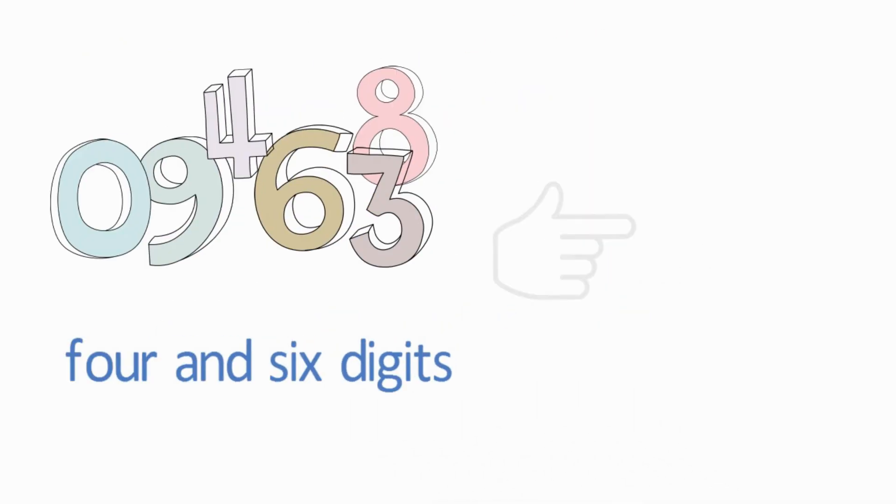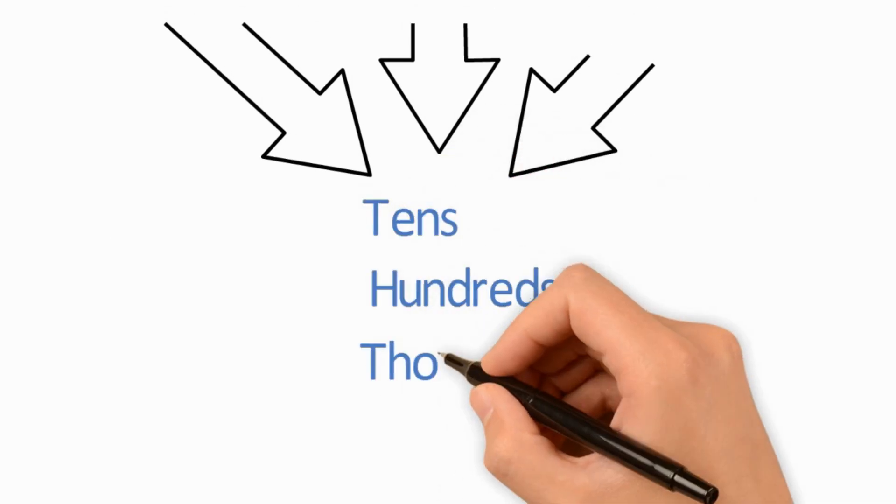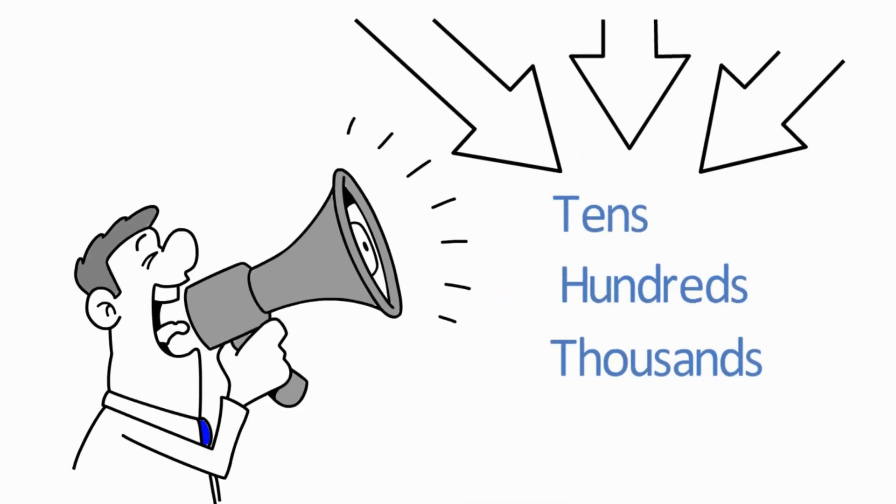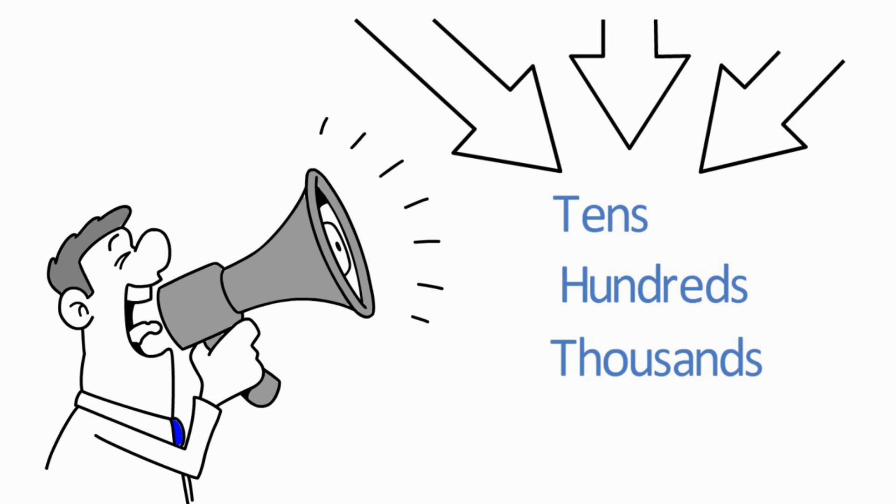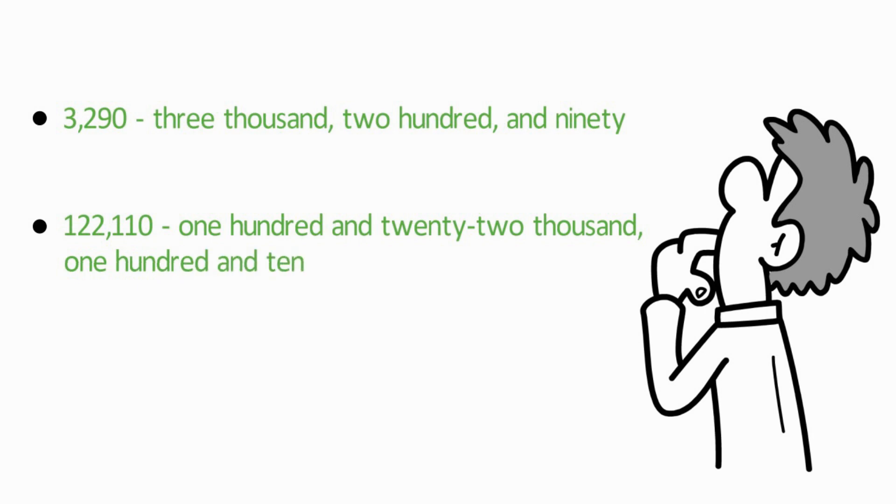When the numbers are between 4 and 6 digits, they are in thousands. You will notice that the tens, hundreds, and thousands are all mentioned when spelling the numbers. For example, 3,290, 122,110.